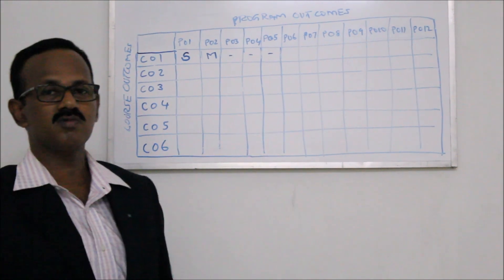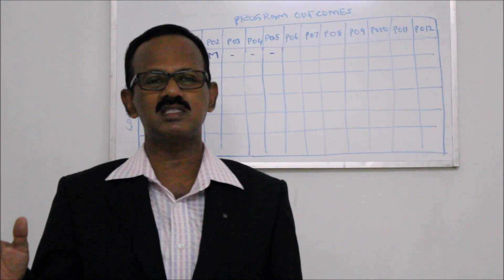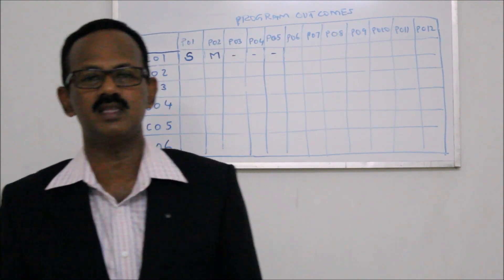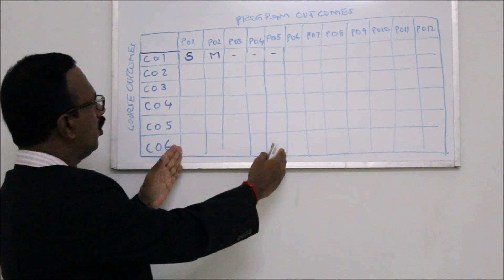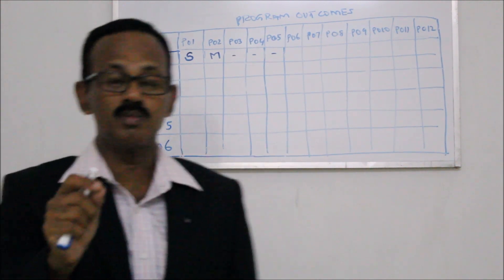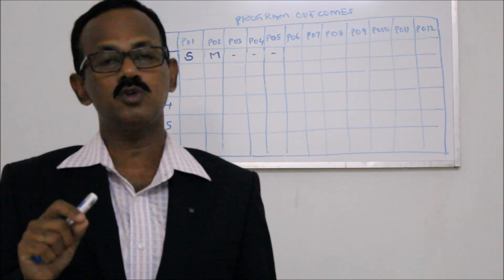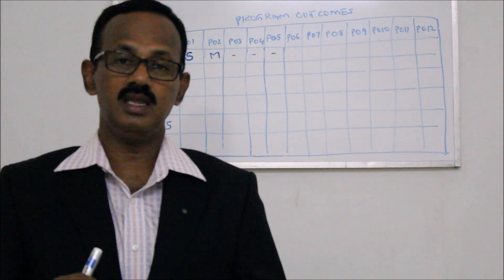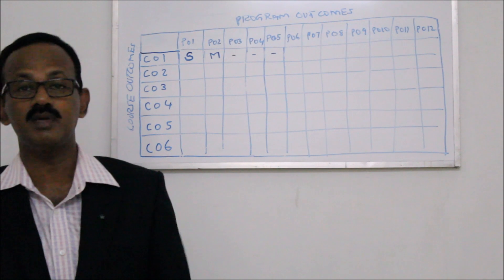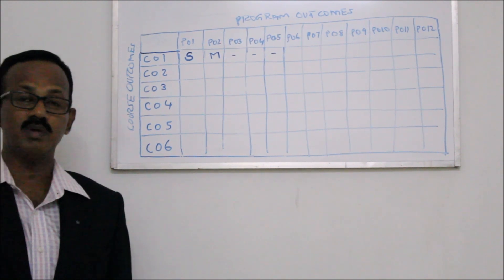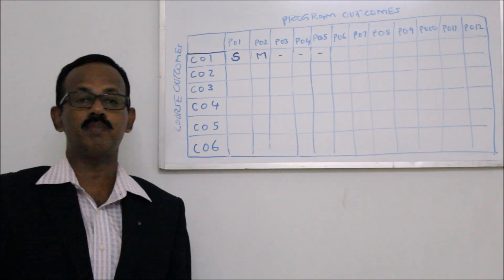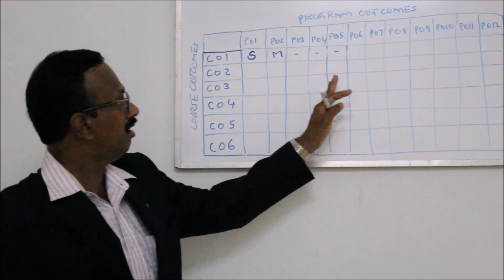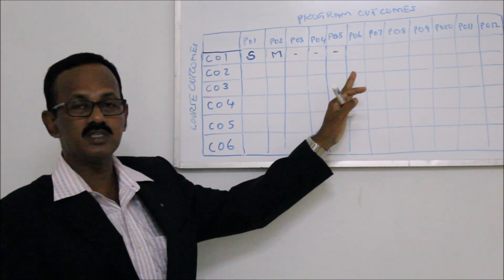From PO6 to PO12, most of these things are skills related — soft skills related — or something related to society, lifelong learning, and things like that. Usually course outcomes will easily get related to program outcomes 1 to 5. But when it comes to program outcomes 6 to 12, special effort has to be taken by introducing systems and certain assignment patterns so that through a course it will be possible to map many of the program outcomes from PO6 to PO12.